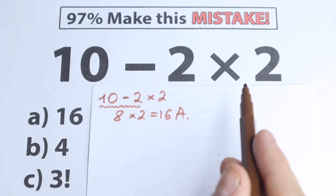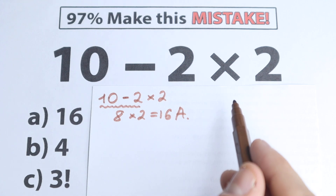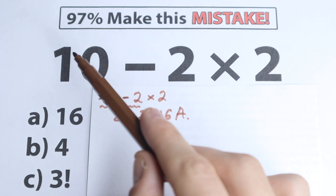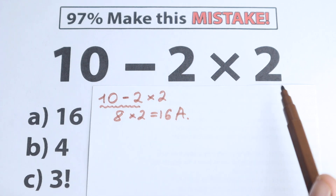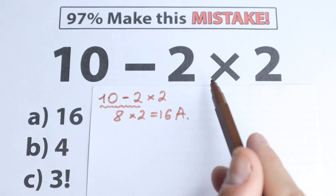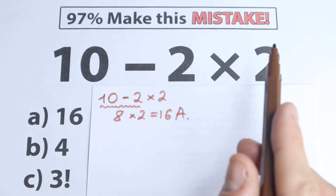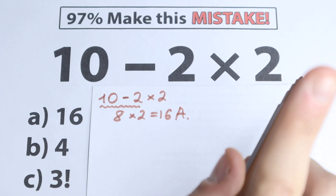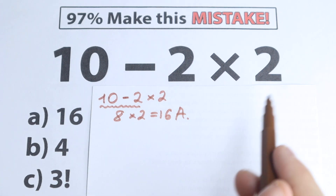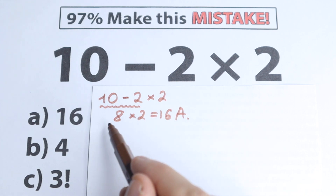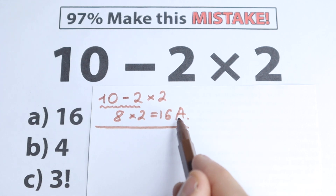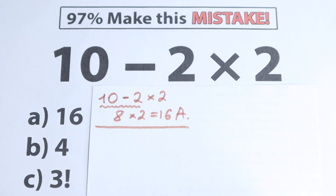In math we need to know the correct order to perform operations. We have many math operations like division, subtraction, and addition, and we need to understand the correct order. Whatever order of operations we select is going to create a different answer, so there is one and only one correct order of operations. I want you to understand the correct order of operations.